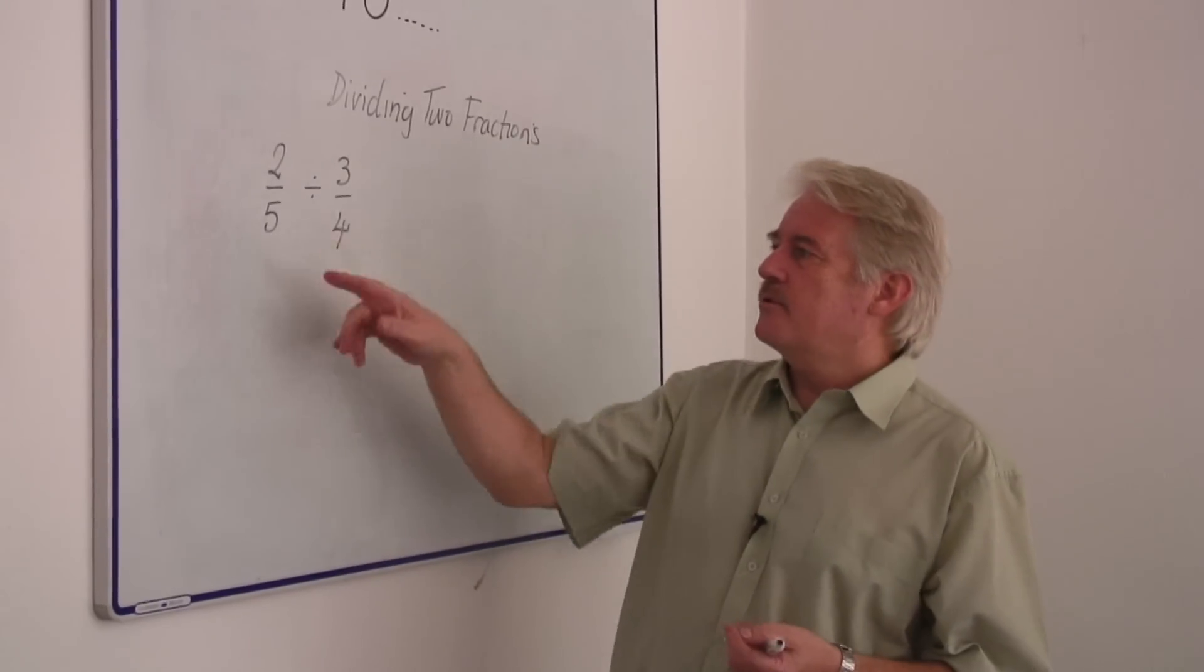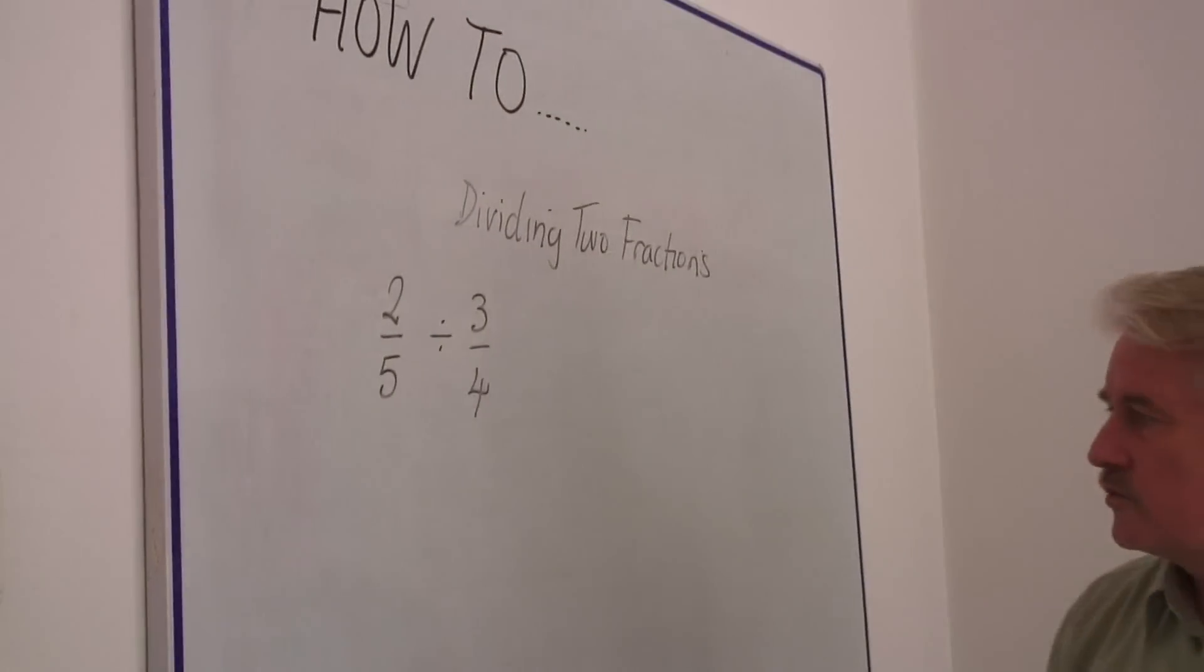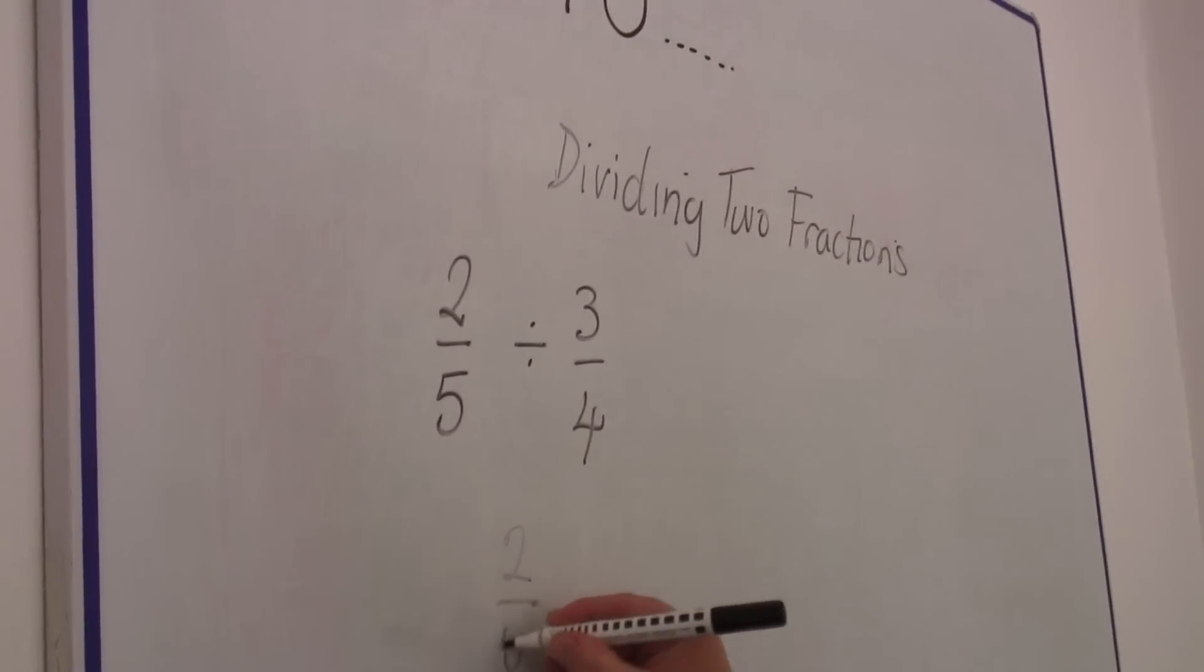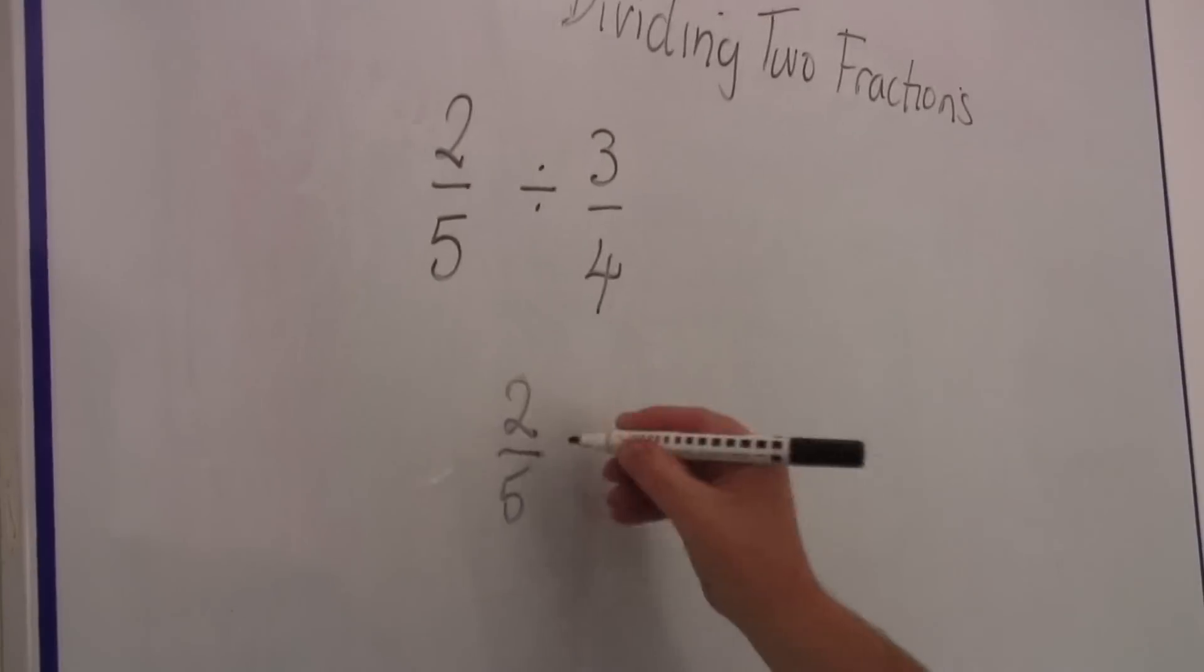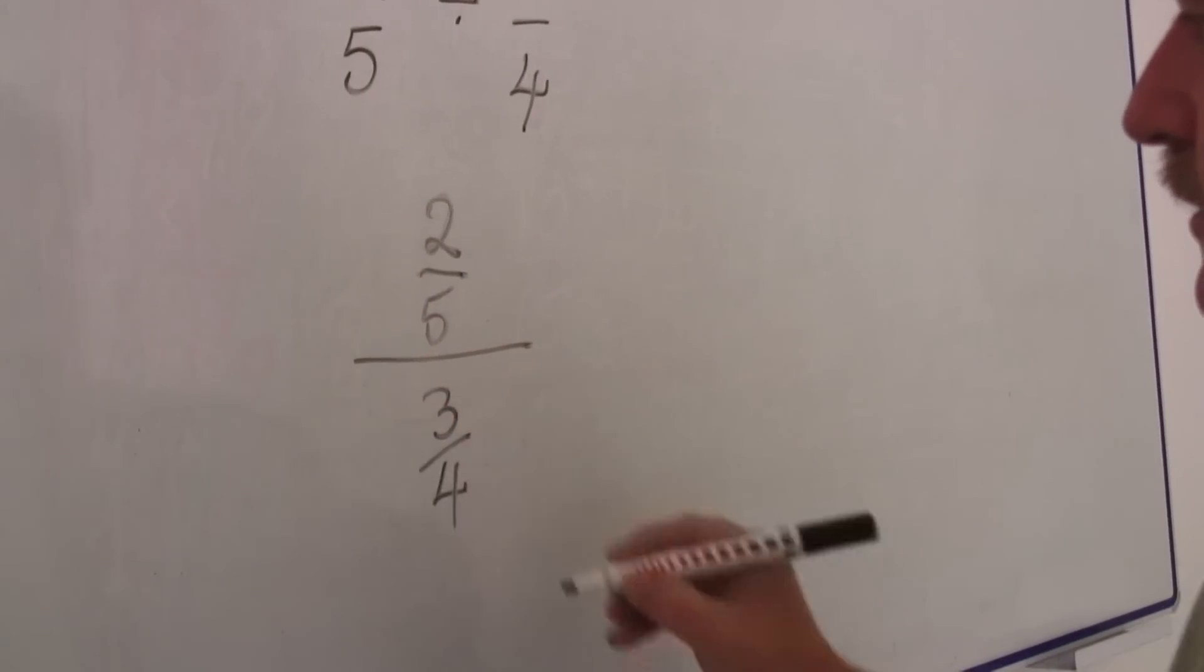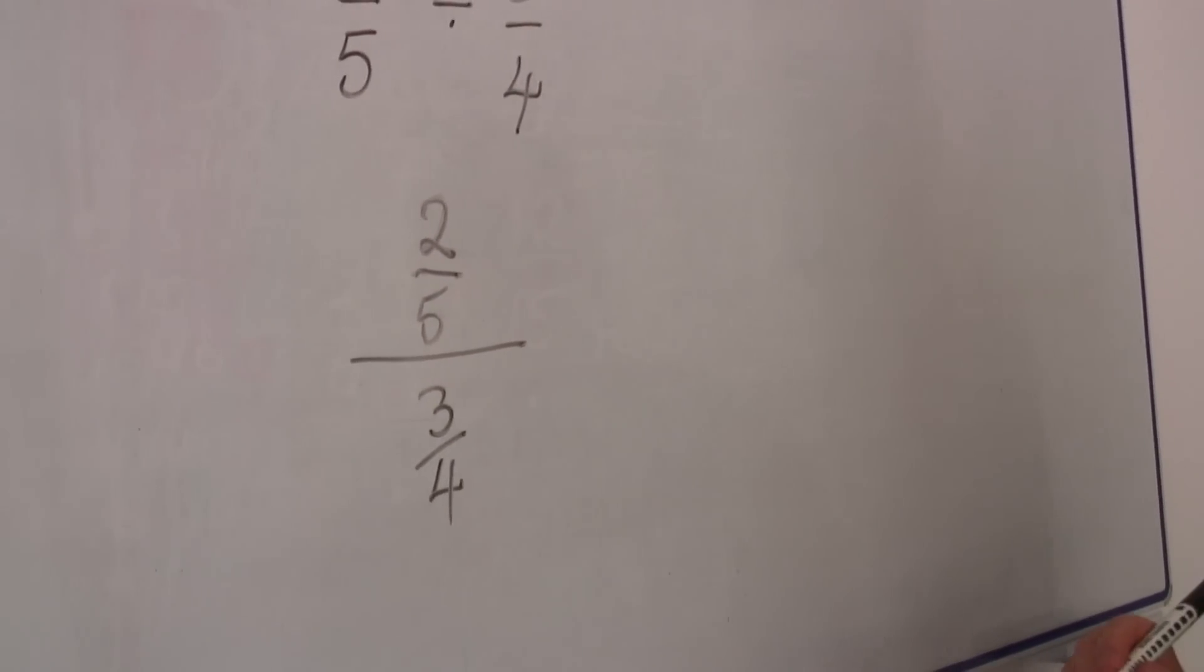Here's an example, two fifths divided by three quarters. I could write it in this way, two fifths divided by three quarters. It's not very easy to see like that and it isn't very much help.